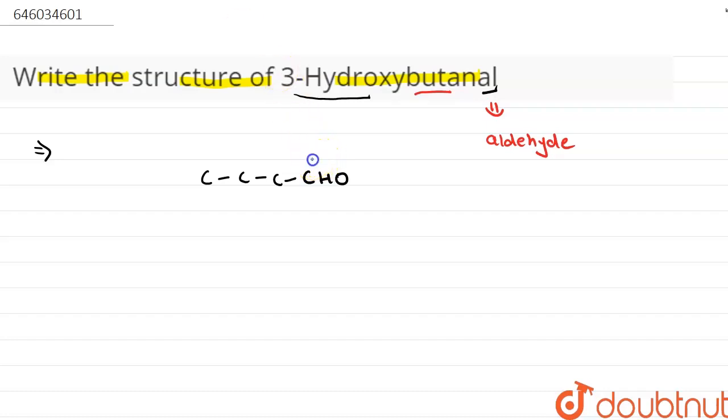Therefore we can start the numbering from this carbon so that the aldehyde group will get the position first. So this will be first, second, third, and fourth. And here we have given a hydroxy group present at position third.